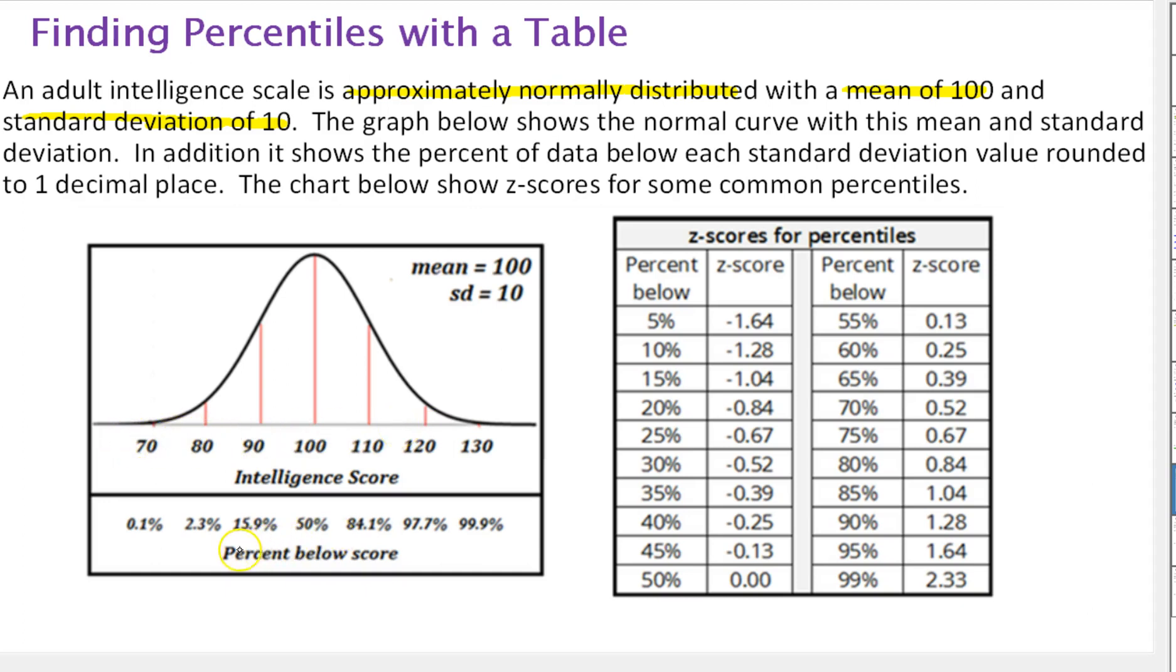Now here's the idea behind a percentile. It tells us a percent below a score. So we know the mean would be the 50th percentile. 50% of the data lies below the score. In general, we usually use percentiles as whole percents. Cent means 100, so we're basically breaking it into 100 equal pieces, 1%, 2%, etc., and then finding the data value where that percent falls below it.